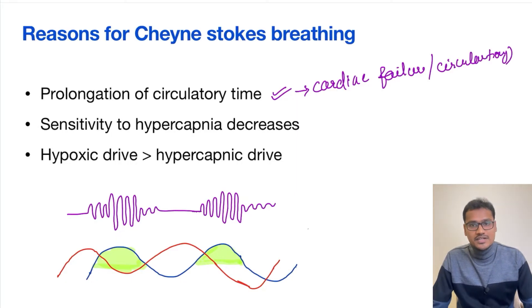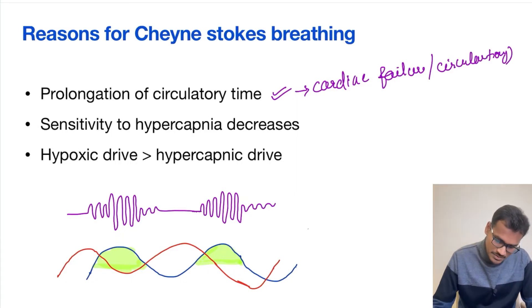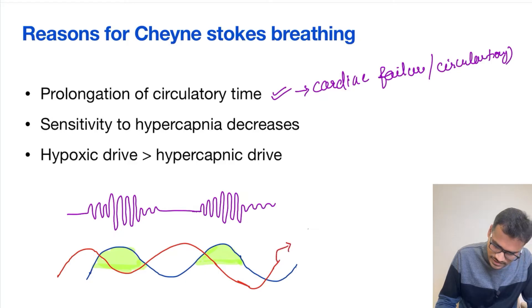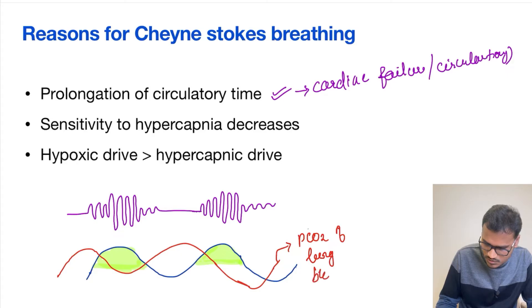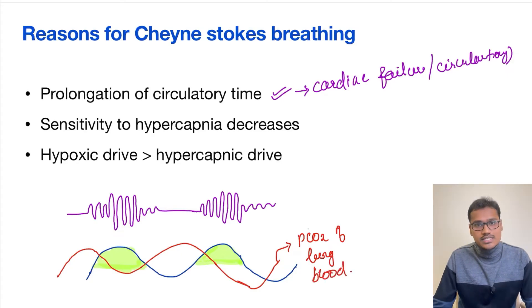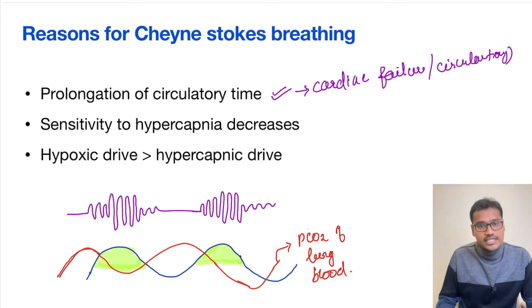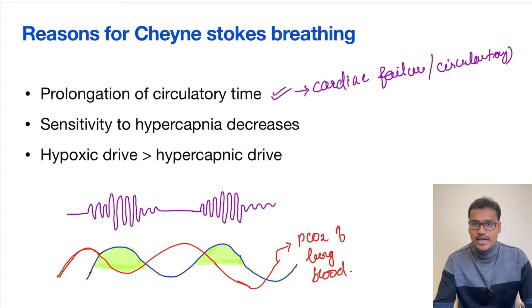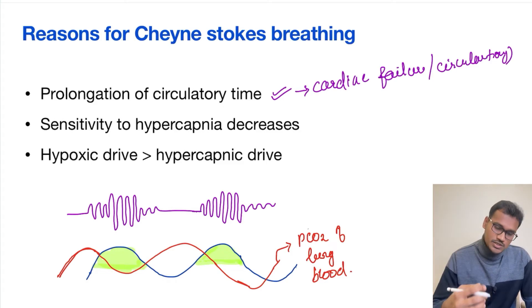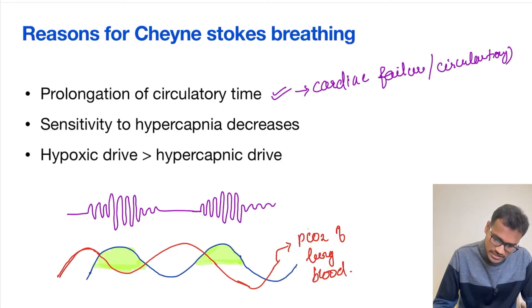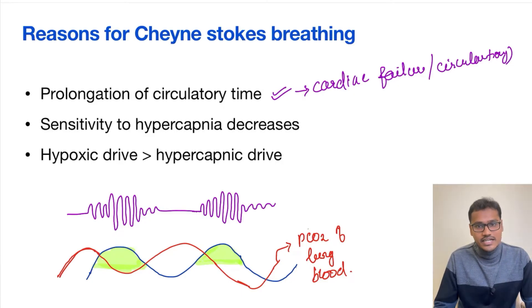Let's try to understand what happens in this circulatory delay. The red curve represents the PCO2 of lung blood. This lung blood PCO2 rises to a level, and ideally, this rise should be detected fast enough — the circulation should carry it to the respiratory neurons in the brain to stimulate the respiratory pattern. But here, due to the delay, the blood is not reaching the brain's circulatory system fast enough.